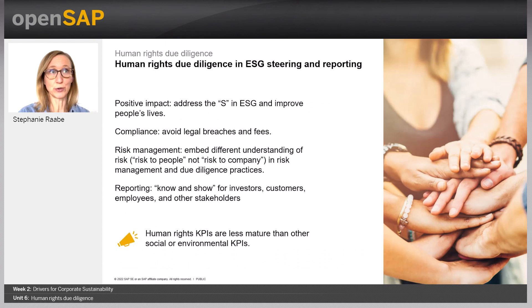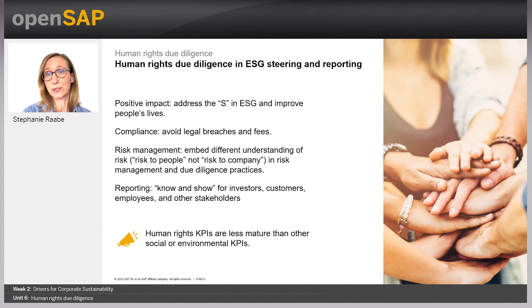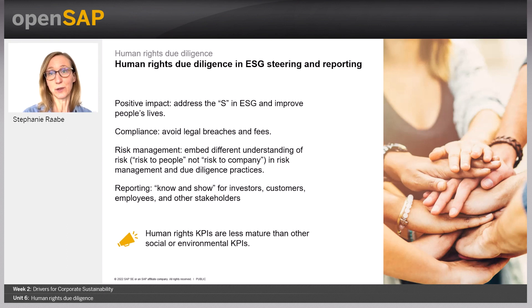Taking action to respect and promote human rights is essential for companies to contribute meaningfully to the people part of sustainable development. Why is it useful to consider human rights in ESG steering and reporting? Considering human rights in risk management helps to avoid business disruptions, litigation, or reputational harm. However, it is very important to understand that the meaning of risk in human rights due diligence is very different from the traditional understanding of risk in companies. Companies usually evaluate risk based on financial implications for themselves, but risk in the context of human rights due diligence requires a change of perspective — it is risk to people that needs to be evaluated.